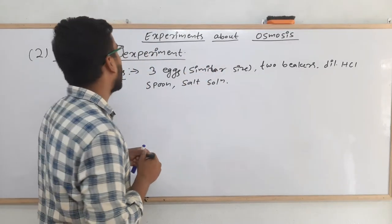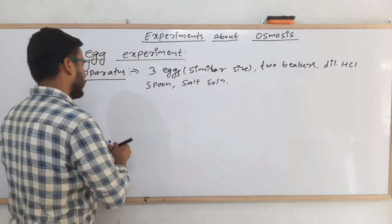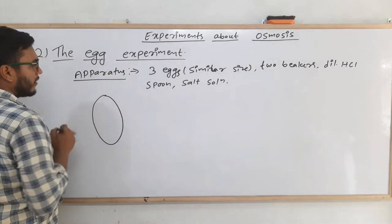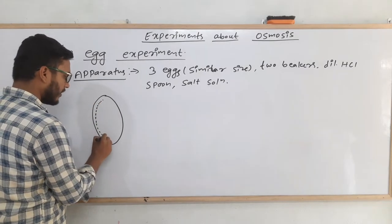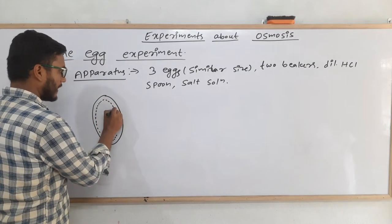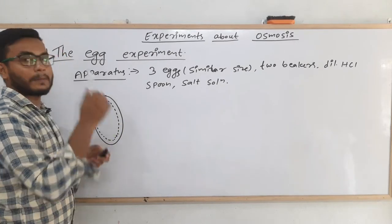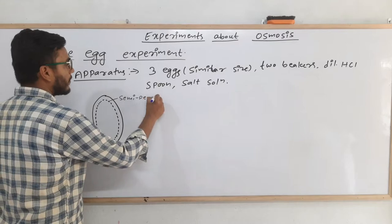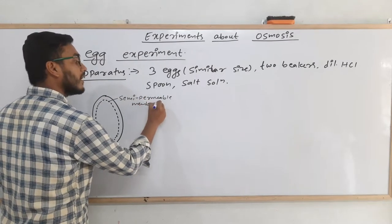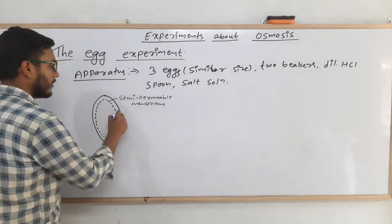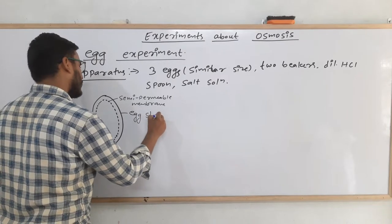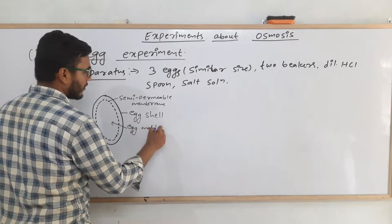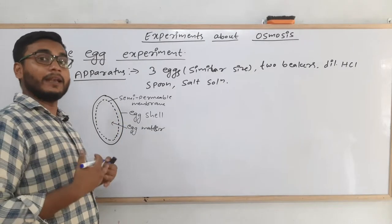These are the apparatus and chemicals required. Now let me draw the structure of an egg. Inside the egg there is a layer that acts as a semi-permeable membrane — this is the egg cell. Inside the egg cell is the egg matter, the useful part we eat when we make an omelette.